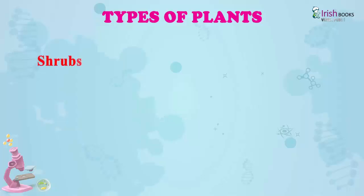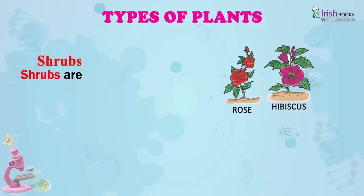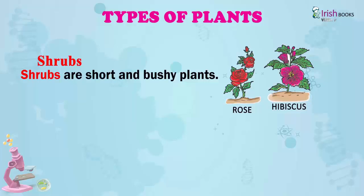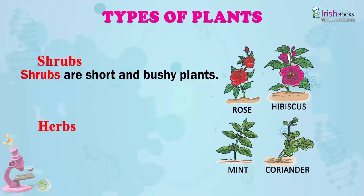Shrubs. Shrubs are short and bushy plants. Herbs. Very small plants are called herbs.